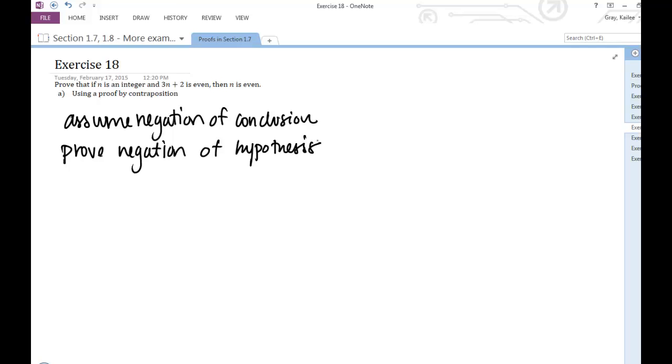So in this case, the negation of my conclusion 'n is even' would be that n is odd. The negation of my hypothesis would be that 3n plus 2 is odd. And careful, right? These are just quantifiers out here letting us know that we're dealing with integers. So that isn't within our hypothesis and conclusion. That's just background information about our variables. Make sure that you're able to make that distinction, because that can be confusing sometimes.